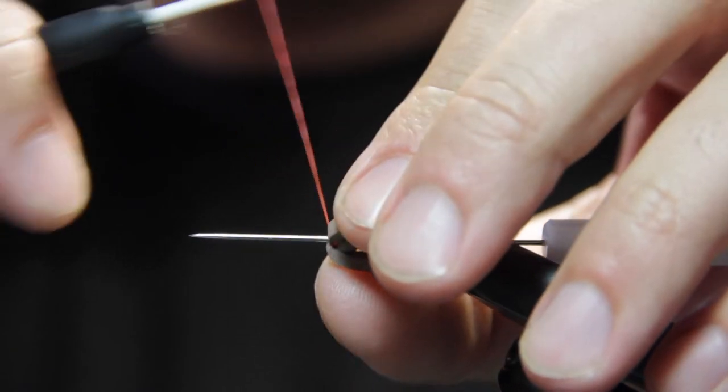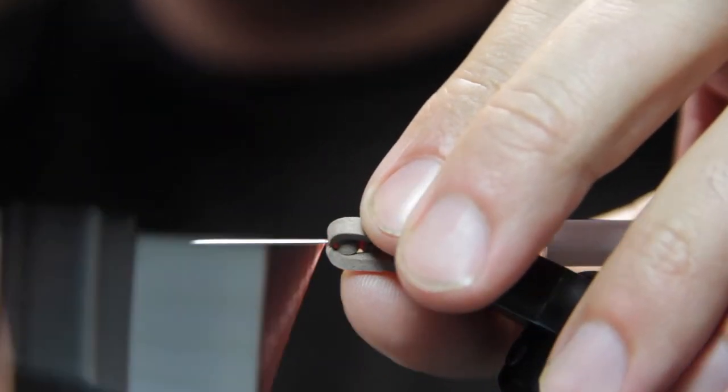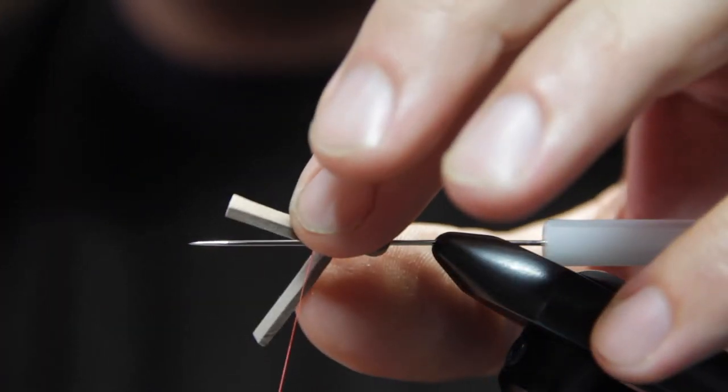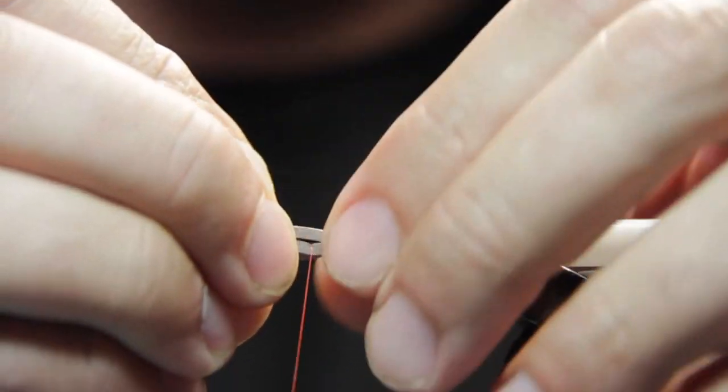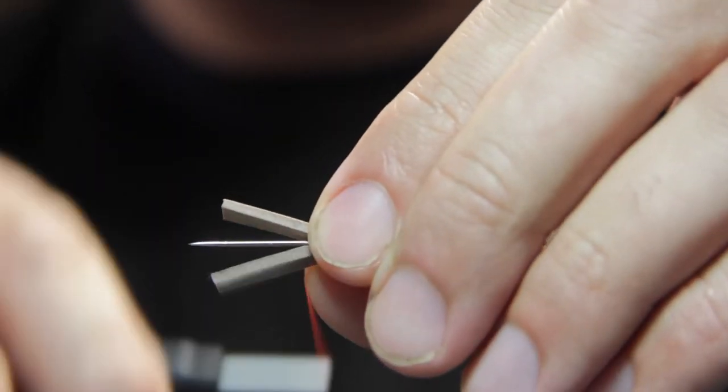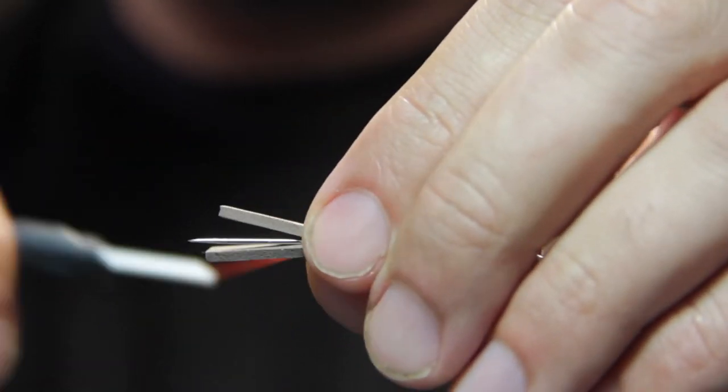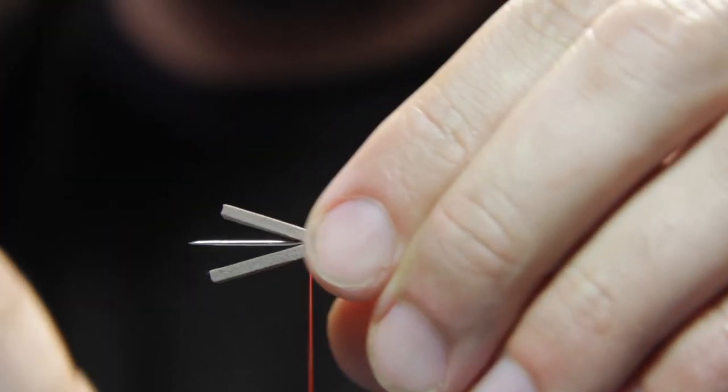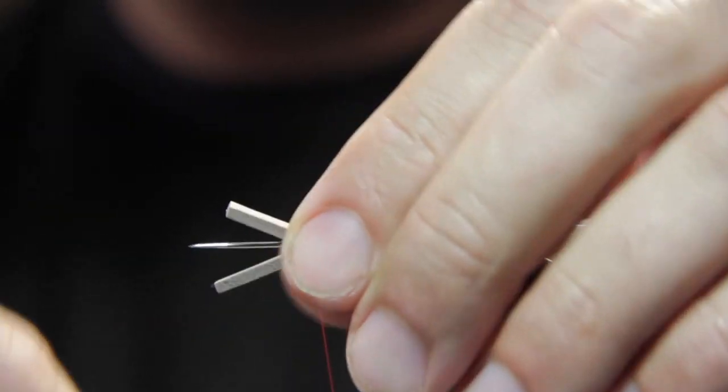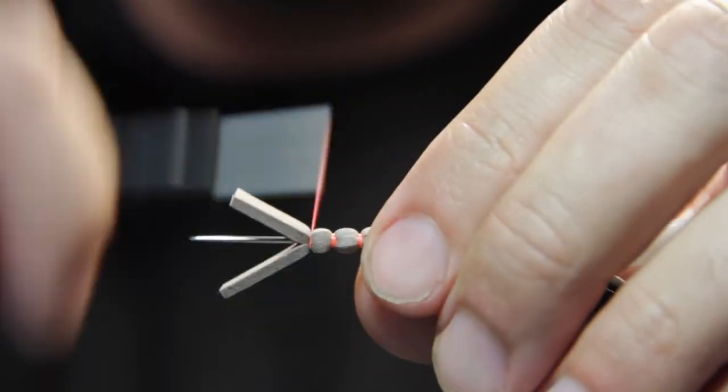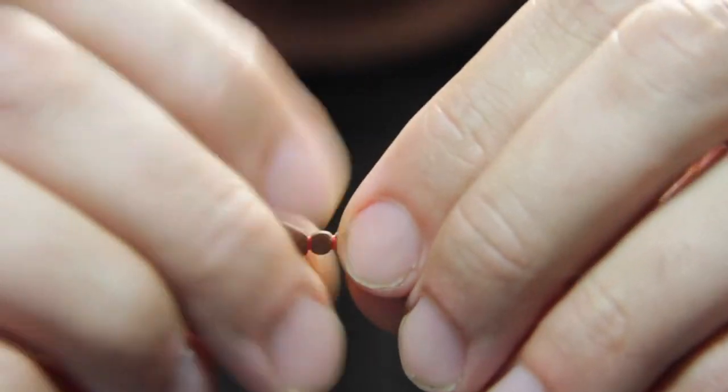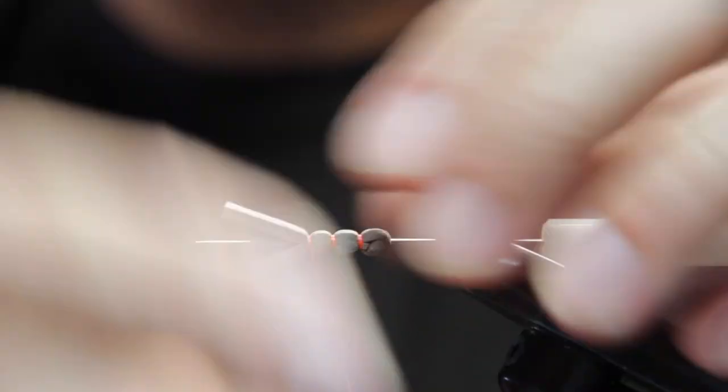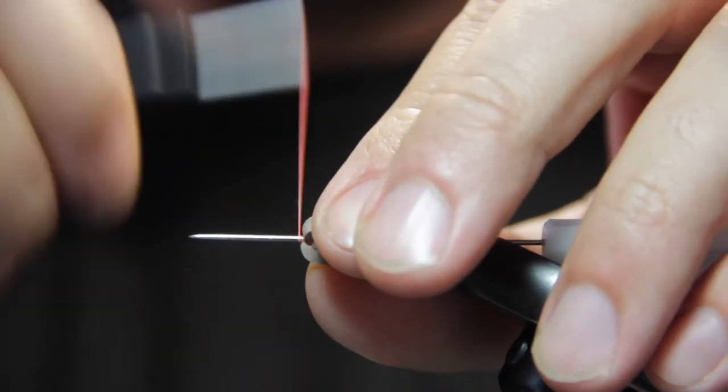Same thing, split the foam, advance the thread, trying to make kind of equal spacing here in our segmentation. It can kind of want to rotate around on it, so we're trying to use our hands to prevent that from happening.